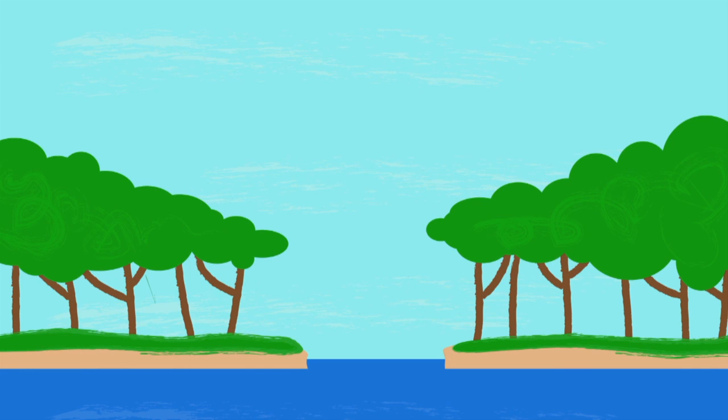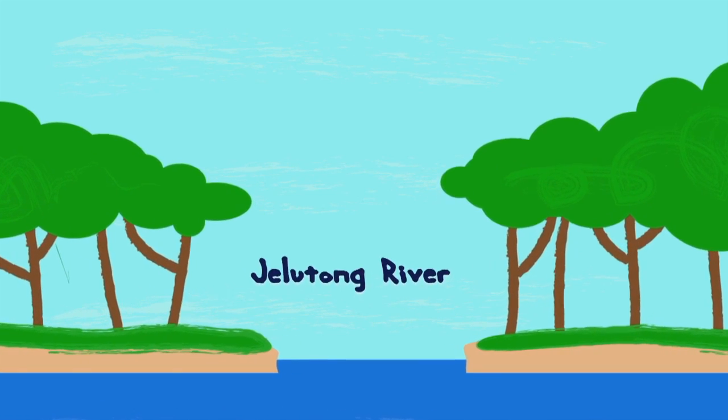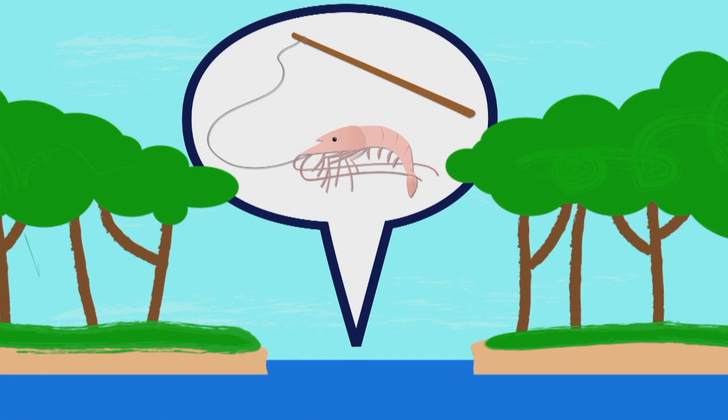Originally, the main island of Pulau Ubin itself was two halves, bisected by the Jilatong River. When prawn farming took off on the island, mud buns were created across the river so as to join the two halves of Ubin to form one whole island.